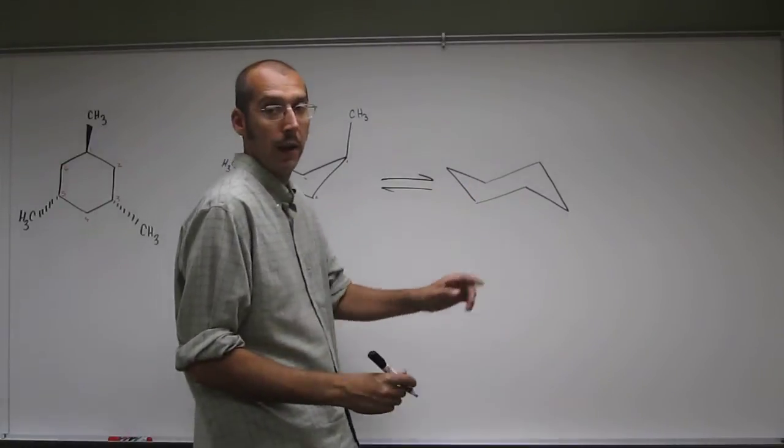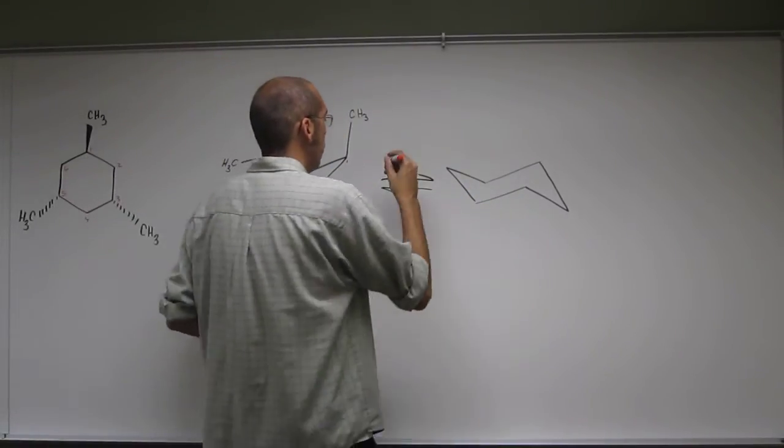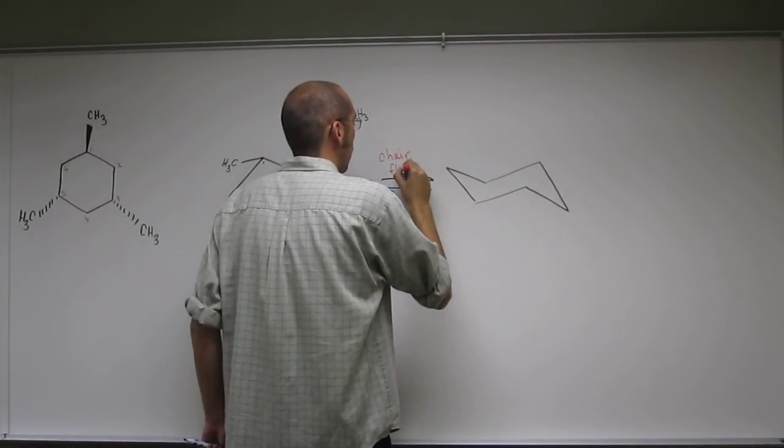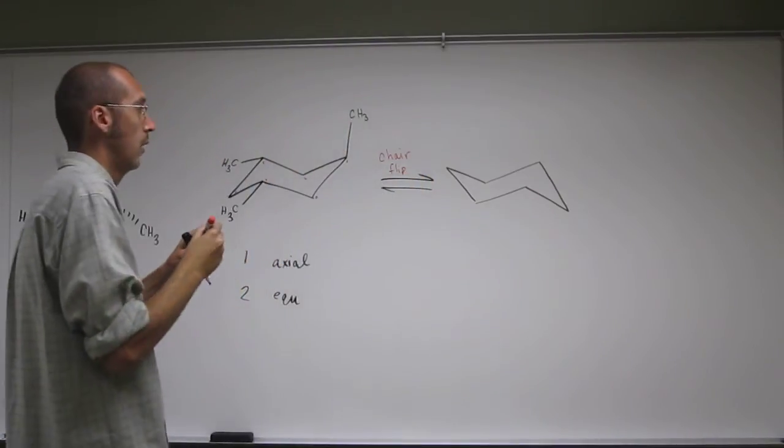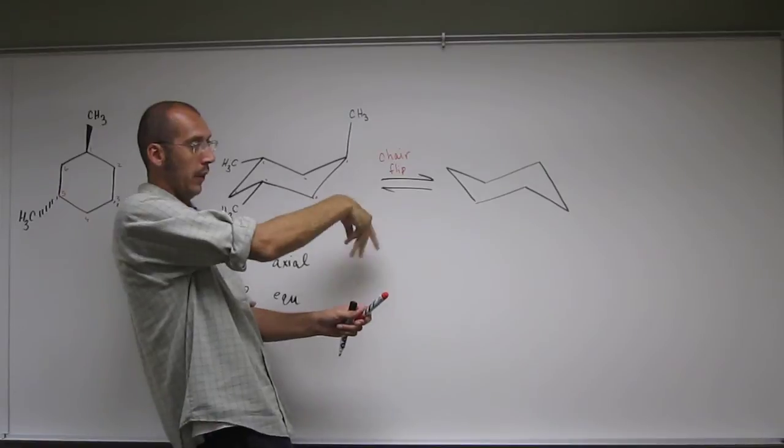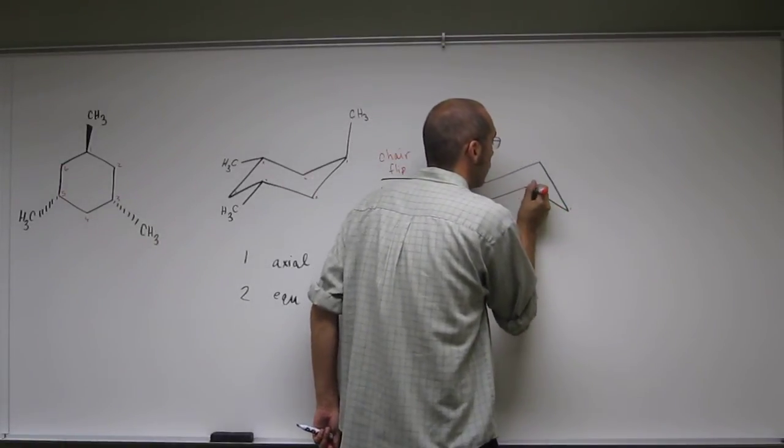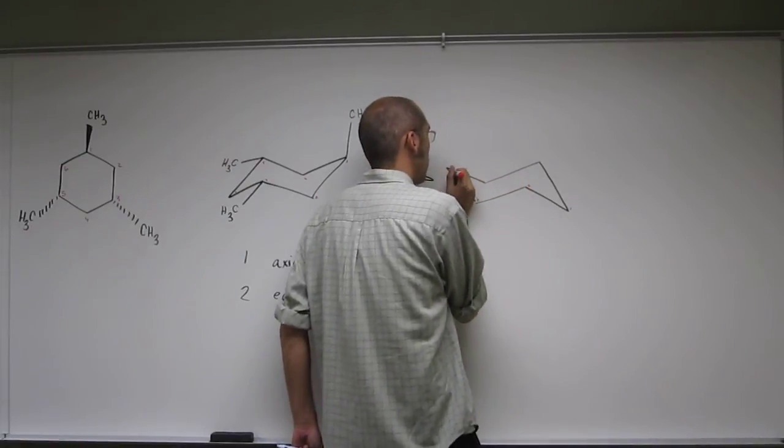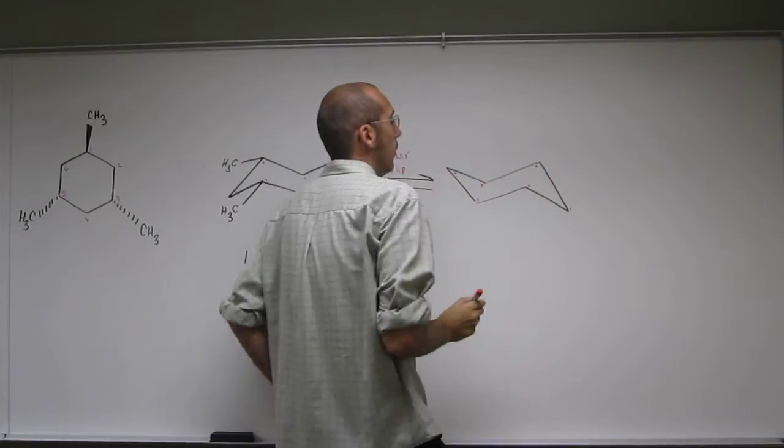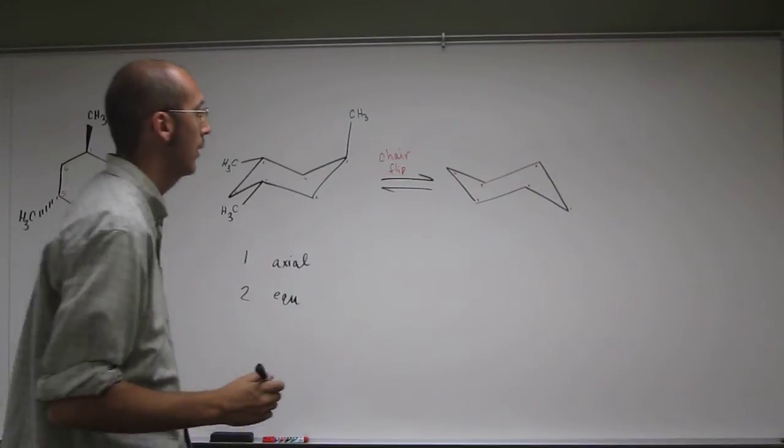Okay, let's do the same analysis over here. So remember when we do the chair flip. Okay, the 1 position now comes down here, because you're kind of flipping that envelope down like that. So we've got the 1 there, 2, 3, 4, 5, and 6. Remember when we do the chair flip, it goes from axial to equatorial.